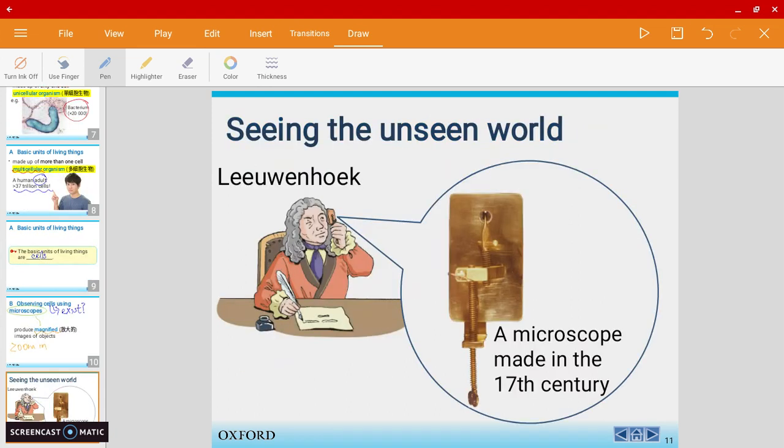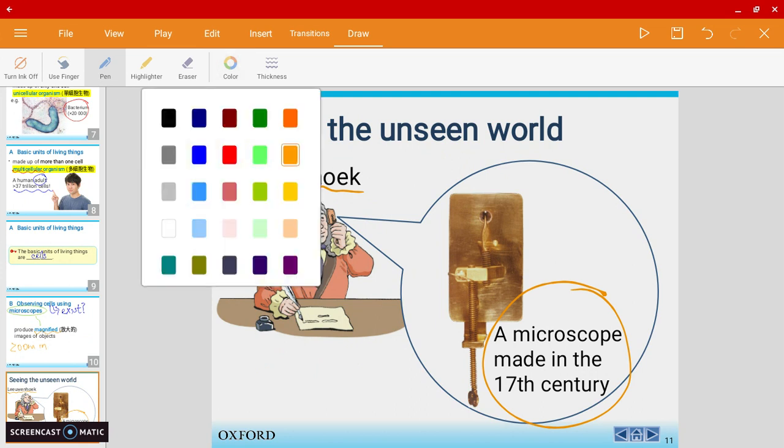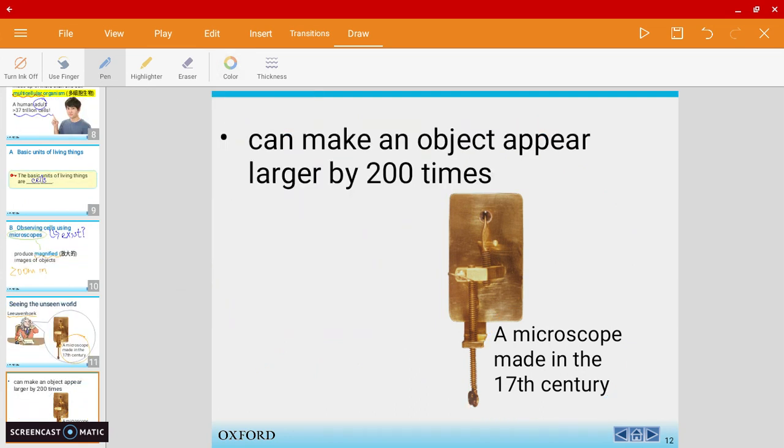Just a bit of history about microscopes. There was this scientist by the name of Leeuwenhoek. He was the first one that invented a microscope back in the 17th century. His microscope was able to make an object larger by around 200 times. Of course, nowadays microscopes are able to enlarge by thousands or millions of times, but back then this was a really big thing.